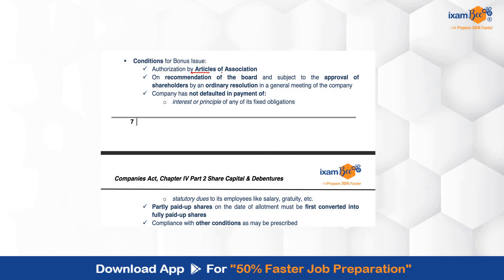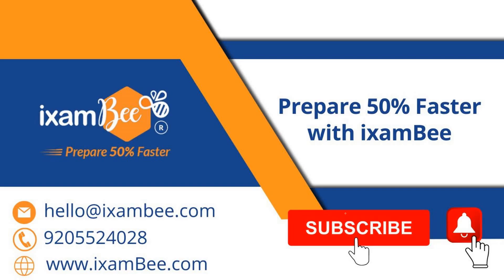For bonus issue, there are certain conditions and requirements. It has to be authorized, and there must be a recommendation of the board. Final approval of shareholders is required by ordinary resolution. The company should not have defaulted, and whatever is partly paid has to be converted into fully paid bonus shares — that has to be complied with.